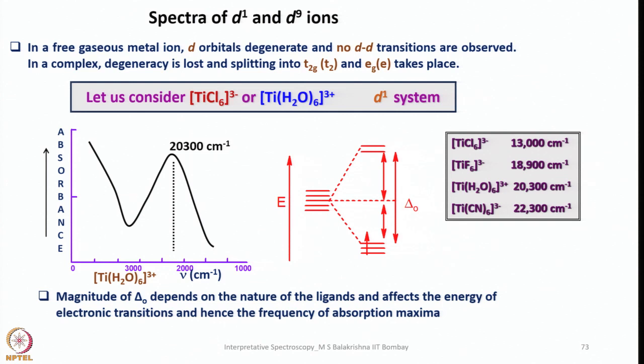Now let us consider the spectra of D¹ and D⁹ ions. D¹ has one electron and D⁹ has one electron less than a completely filled configuration, so they have similarities — that is why we consider them together. In a free gaseous metal ion, d orbitals are degenerate and no d-d transitions are anticipated. In a complex, degeneracy is lost, and in an octahedral field, d orbitals split into T₂g (consisting of dxy, dyz, dxz) and Eg.